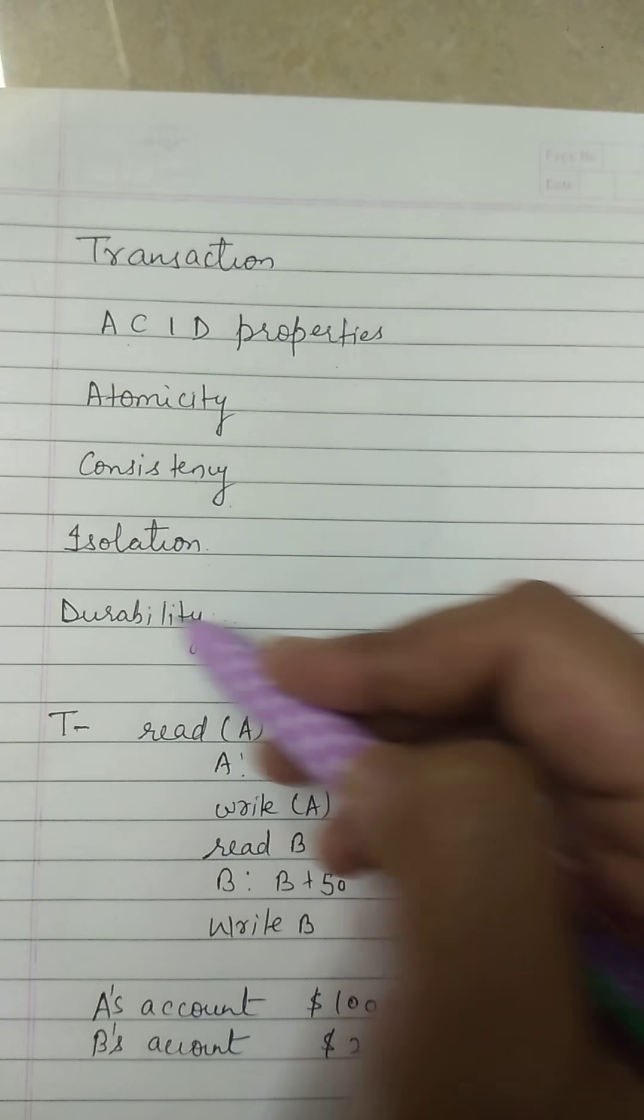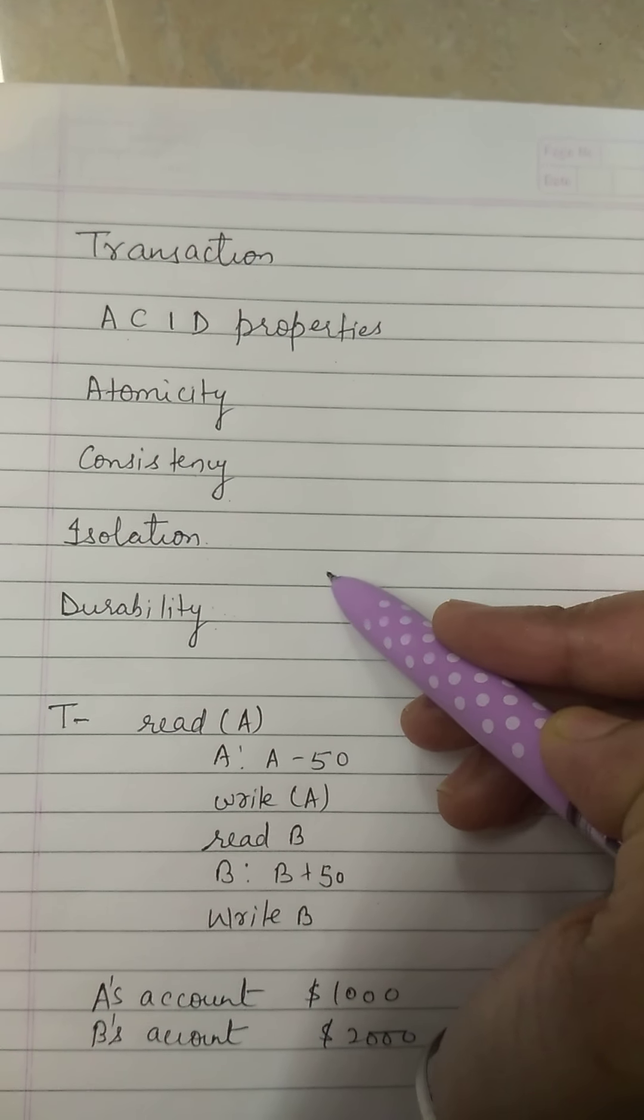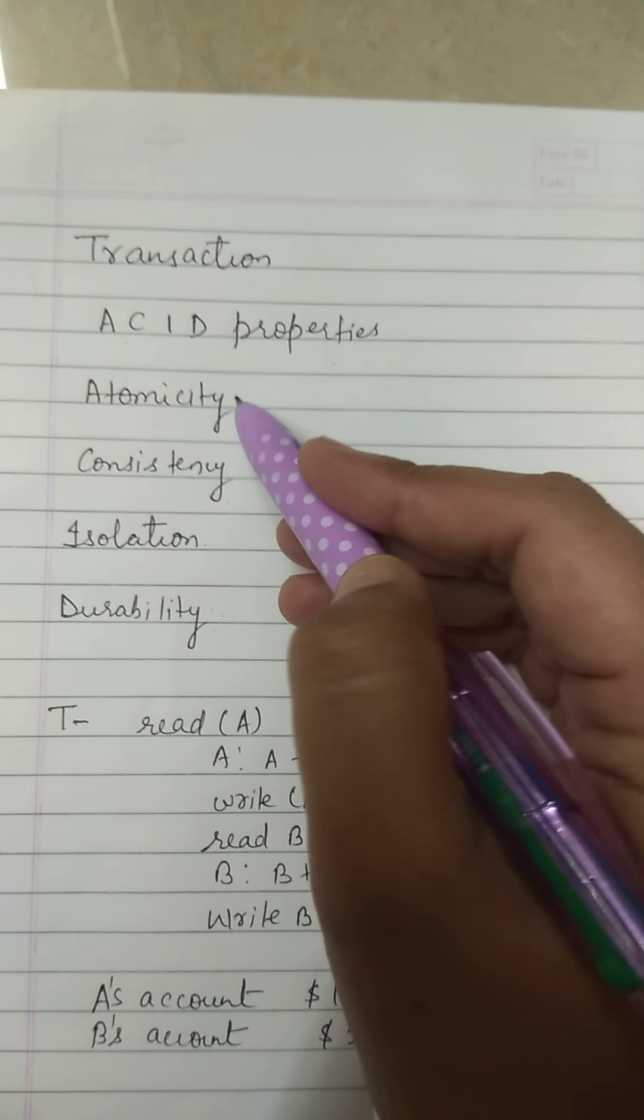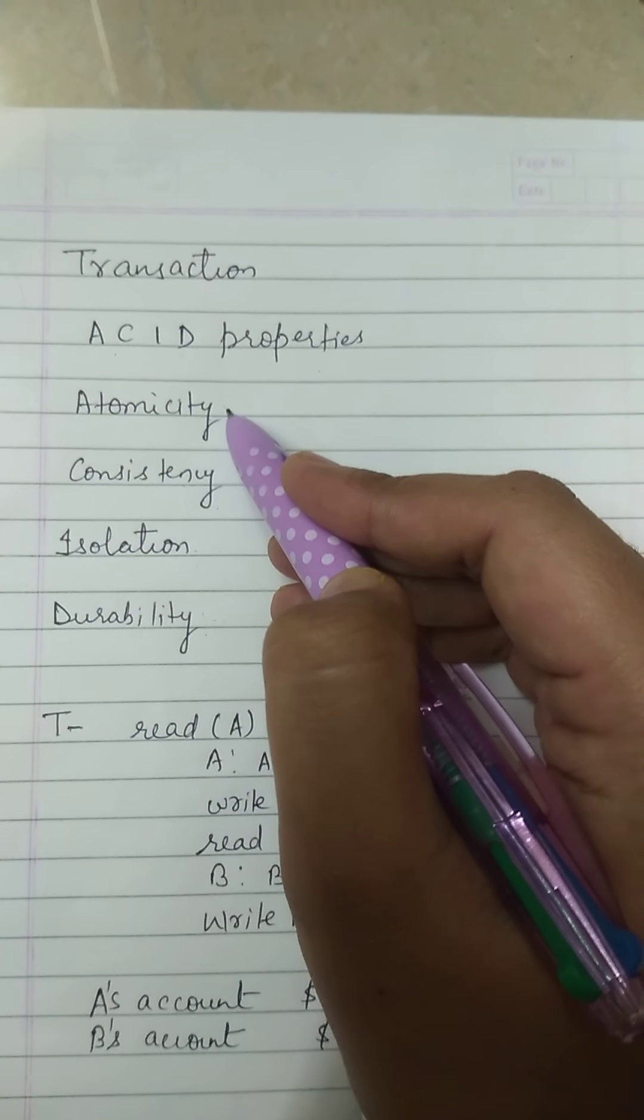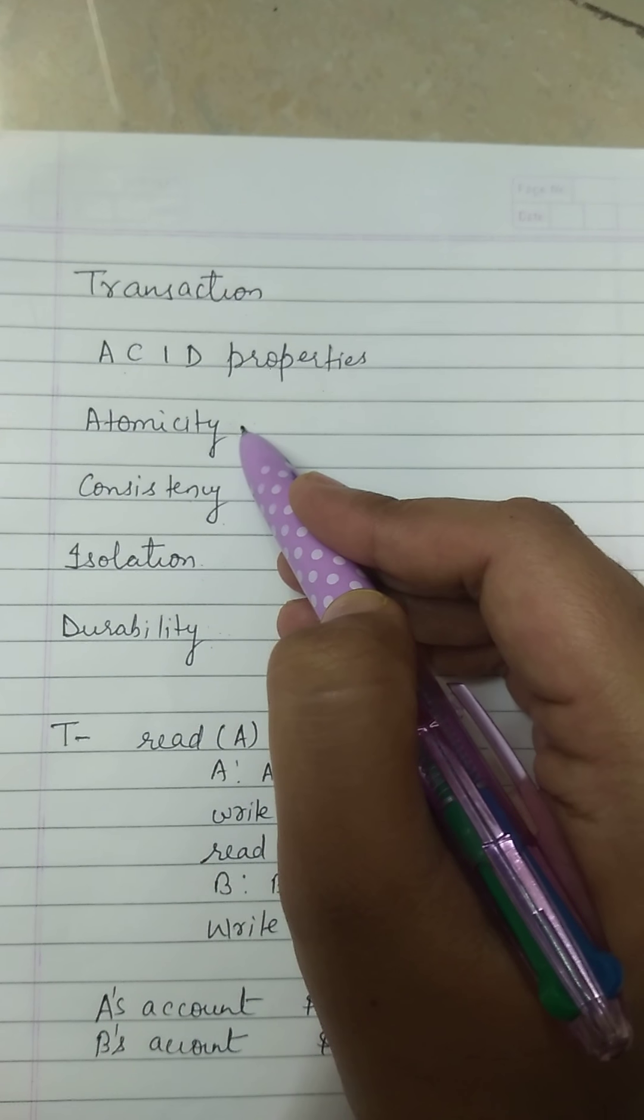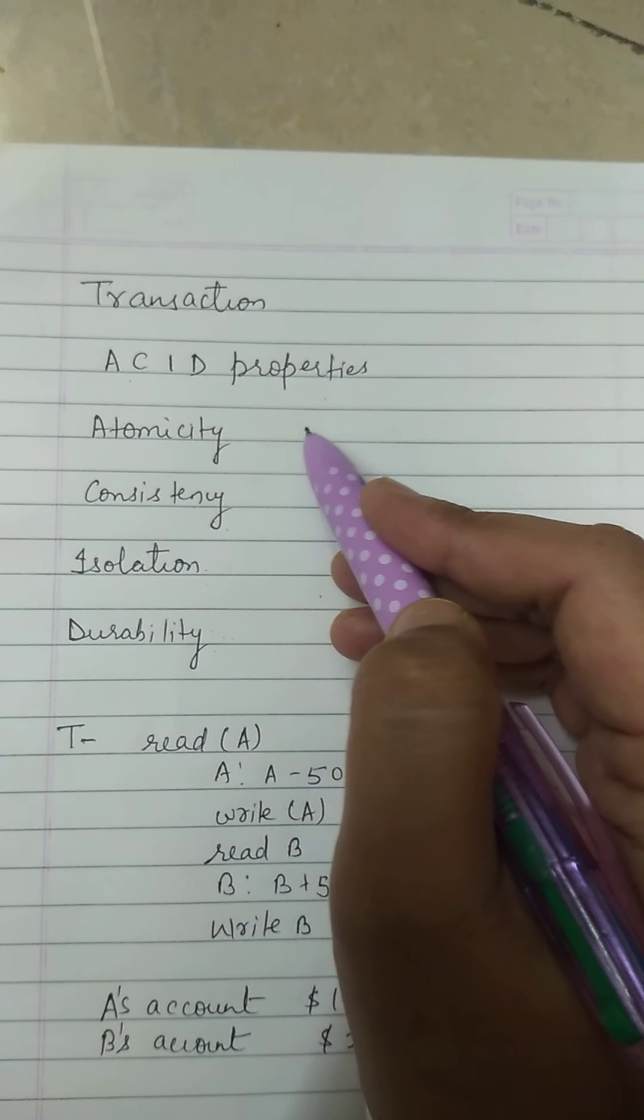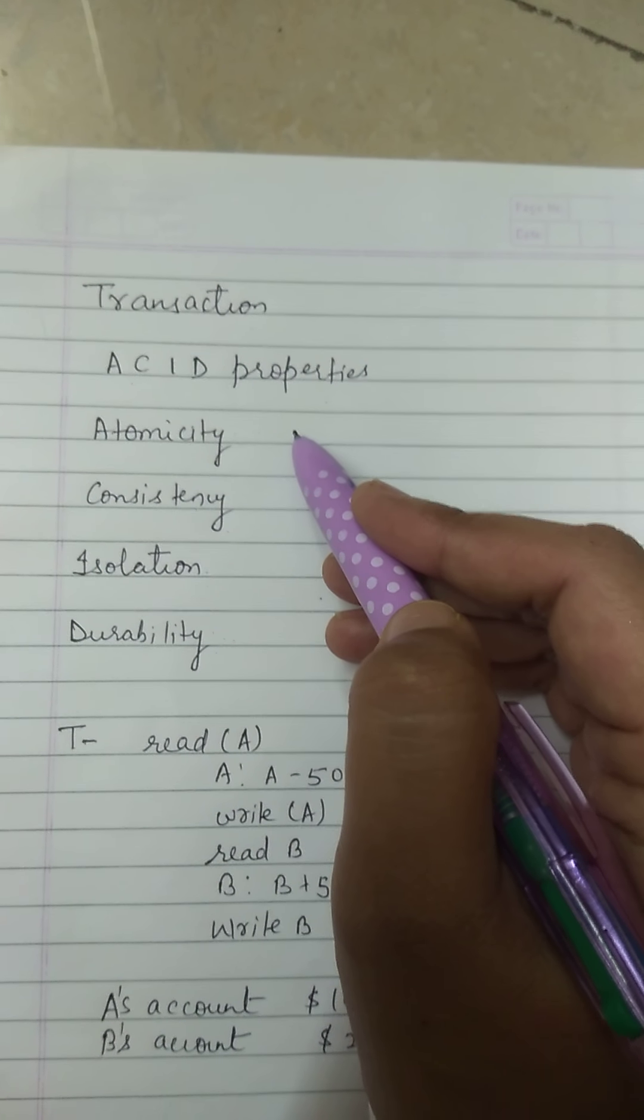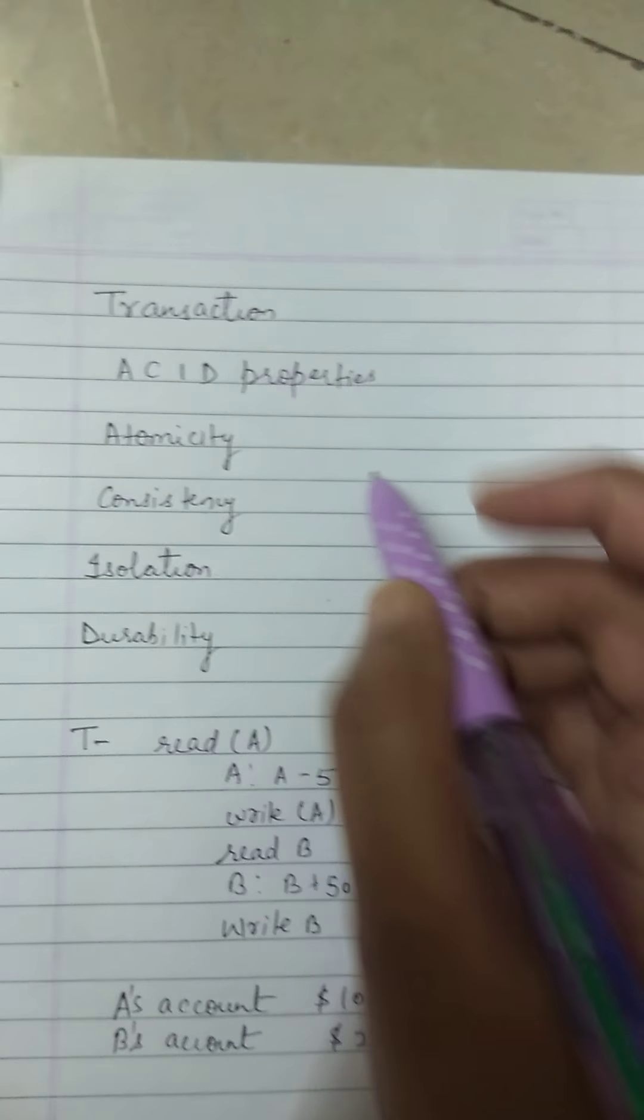First we will discuss all these properties, then we will take an example and understand these concepts. So first is atomicity. What is atomicity? If a transaction is an atomic unit, hence all the instructions within a transaction will successfully execute or none of them will execute.